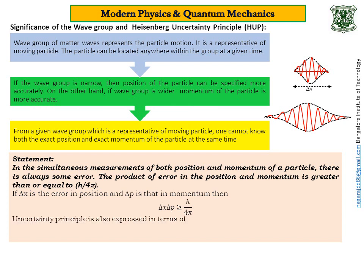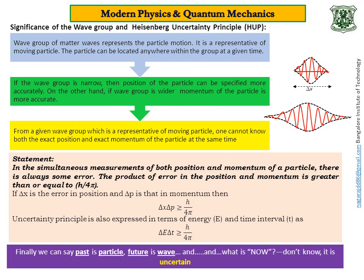We can also express this in terms of energy and time spent by the particle in the excited state: delta E times delta t is greater than or equal to h by 4 pi. The summary of the uncertainty principle: the past is the particle, the future is the wave, and what is present — what is now — we don't know; it is uncertain.